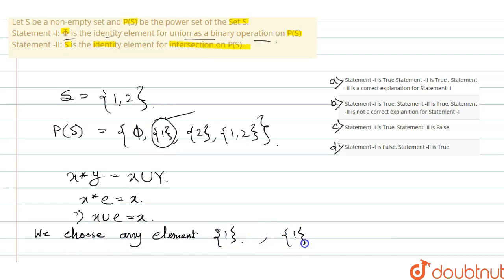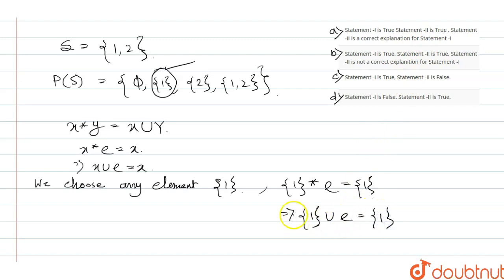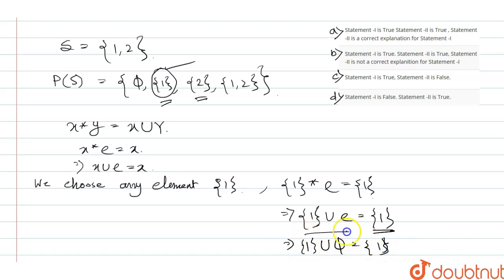So we have {1} ∘ e = {1}. Since the composition here is union, we get {1} ∪ e = {1}. Working through this: {2} ∪ ∅ = {2}, and {1} ∪ ∅ = {1}. The equation is only satisfied for e = ∅, meaning only ∅ works as the identity element.